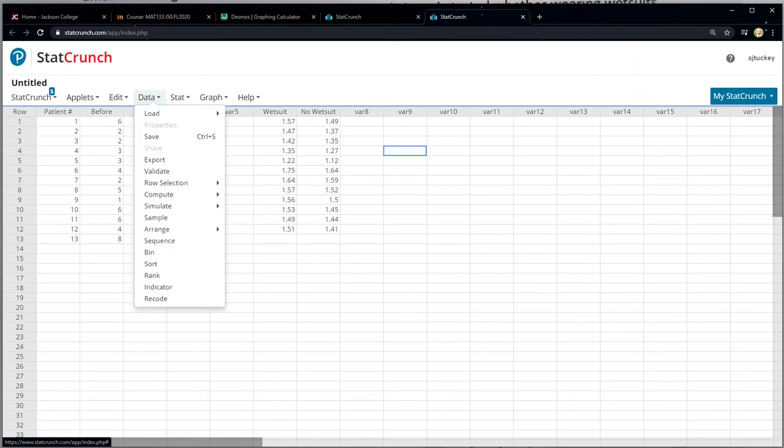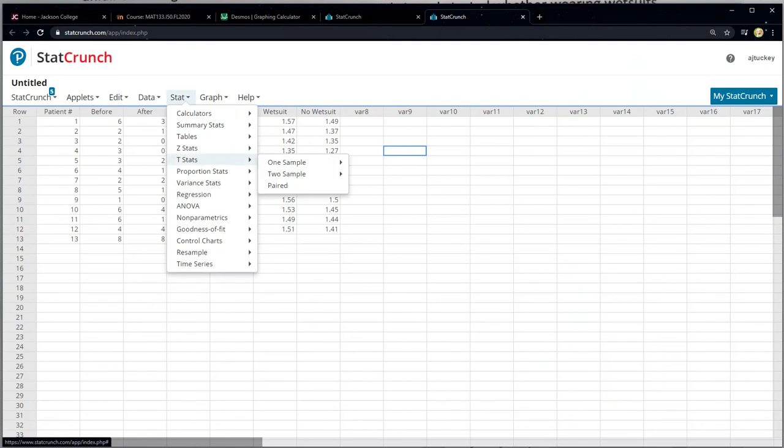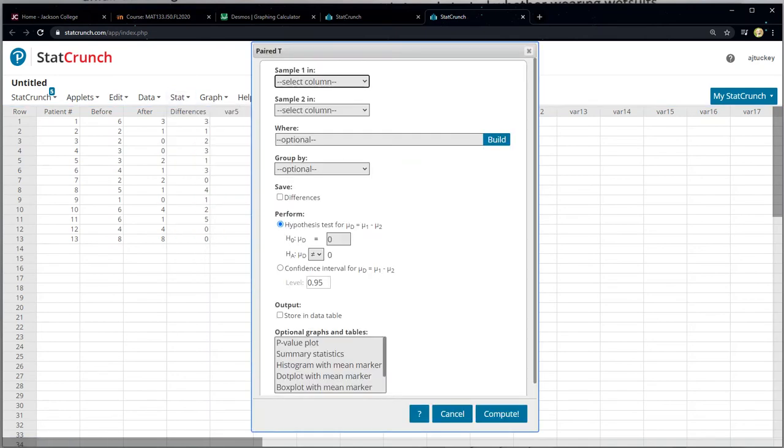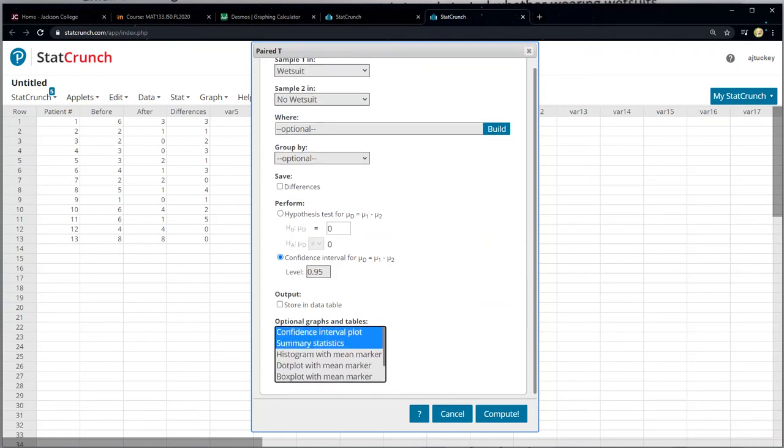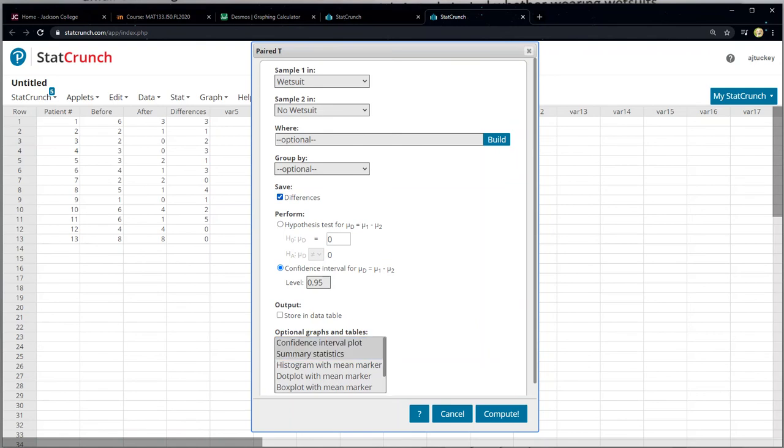Now in StatCrunch, we don't have to do it that way. So let me grab StatCrunch real quick. I have the wetsuit and the no wetsuit. And actually, I can do this when I go to run the confidence interval. So if I go to stat, tstat, and paired right there, I can say sample one is wetsuit, sample two is no wetsuit. I'm actually going to do a confidence interval looking ahead. And you can have it find summary statistics, you can have it do a confidence interval plot. QQ plot, who doesn't like that? And I want it to save those differences. That's key right there.